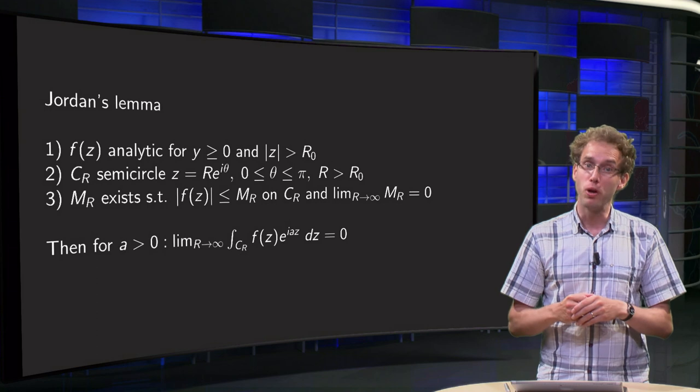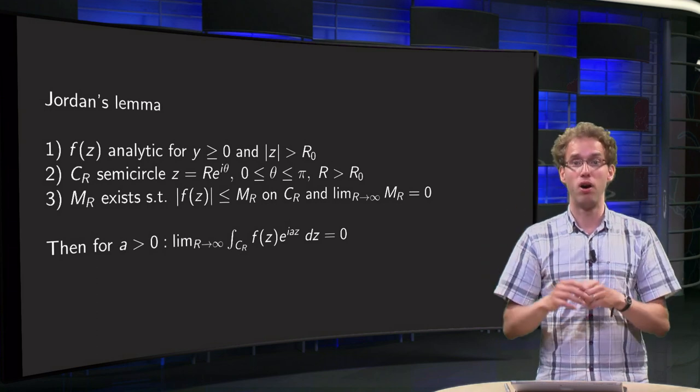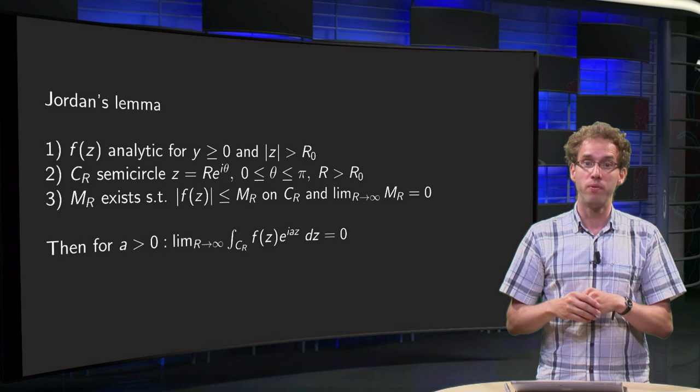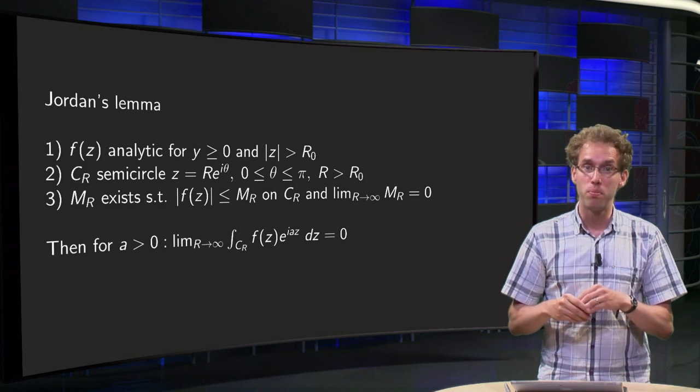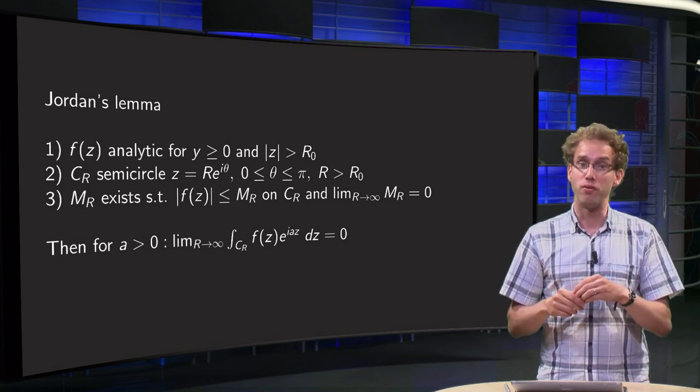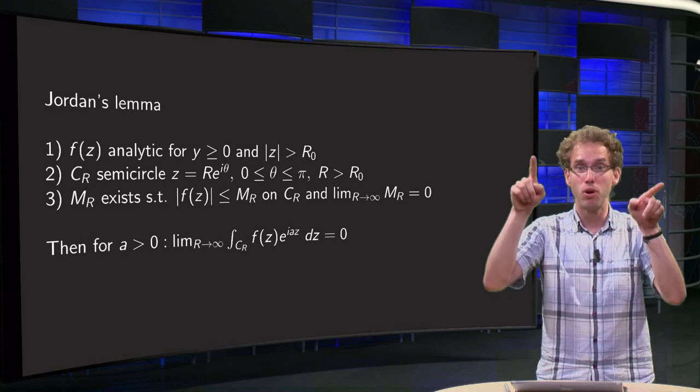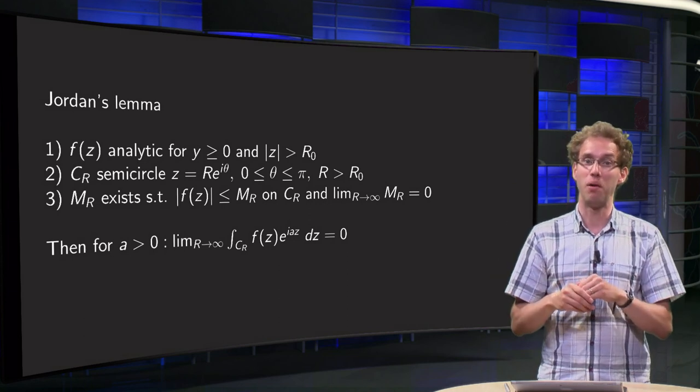If we want to close the contour in the upper half plane, we need to have ω positive. If ω is negative, you have to close in the lower half plane. Why is that?